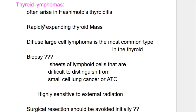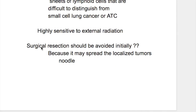Thyroid lymphoma often arises in Hashimoto's thyroiditis. It presents with a rapidly expanding thyroid mass. On biopsy, sheets of lymphoid cells are seen, difficult to distinguish from small cell lung cancer or anaplastic thyroid carcinoma. Thyroid lymphoma is highly sensitive to external radiation. Surgical resection should be avoided initially because it may spread the localized tumor.